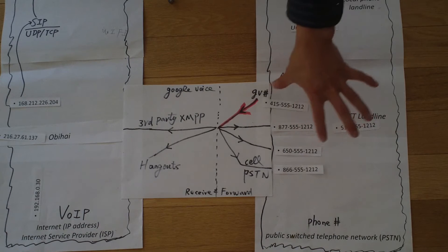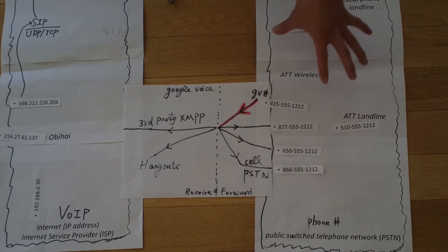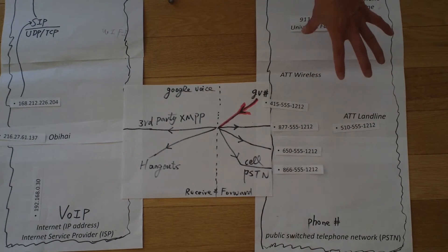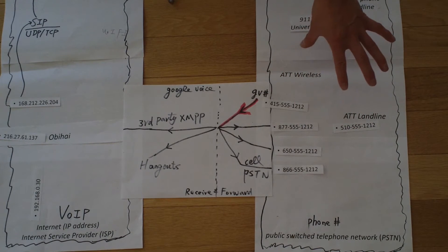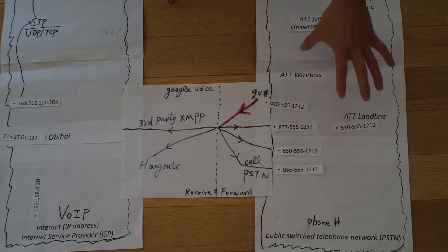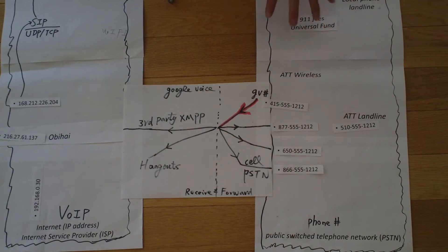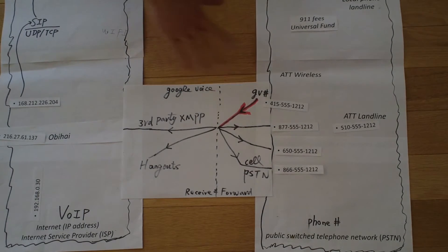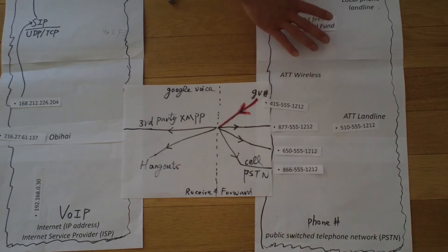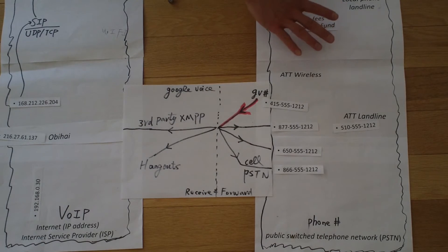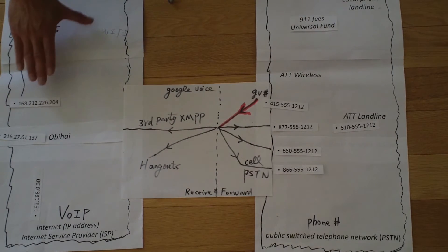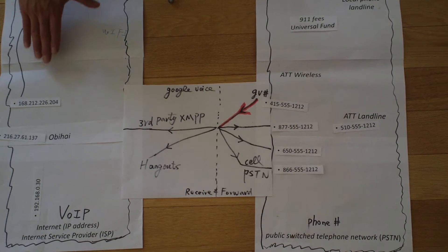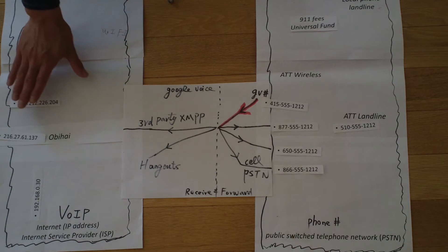Basically, you have the public switching network, which provides you a telephone number. Anyone providing a phone number needs to pay some fees, so it's not free. But Google decided to waive that fee for you, providing a bridge between the public switching network and an internet Voice over IP-based network.